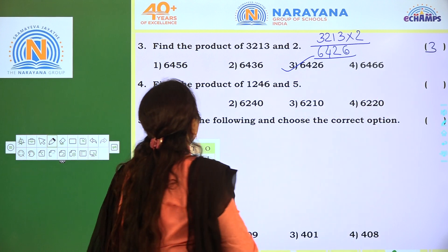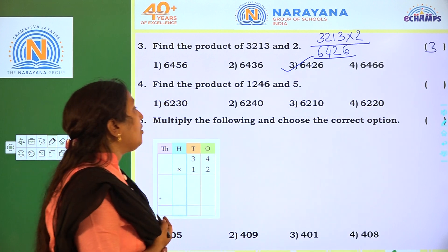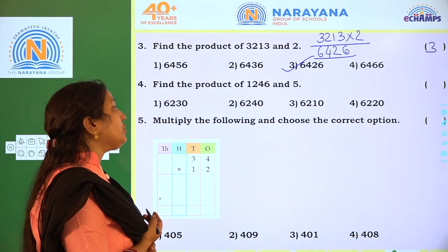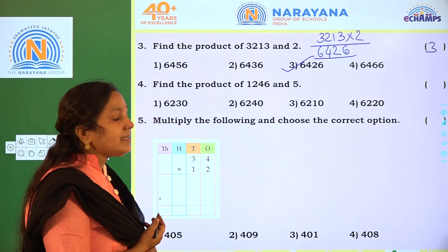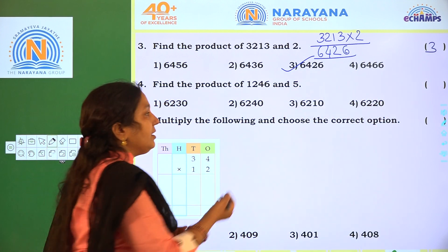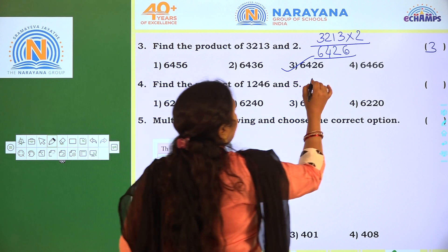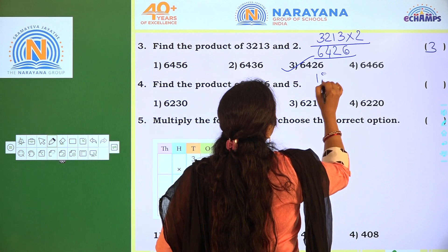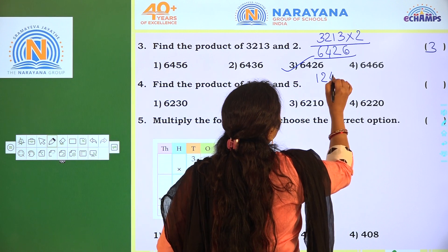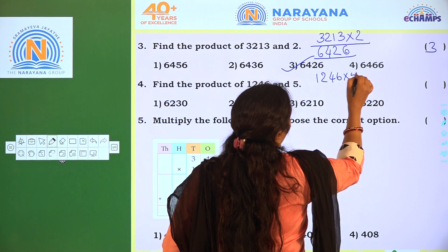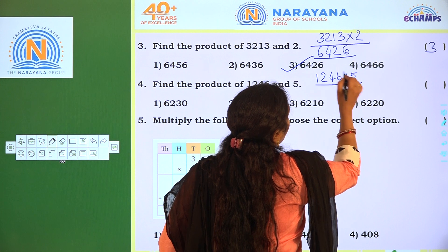Next: find the product of 1,246 and 5. That means 1,246 into 5.